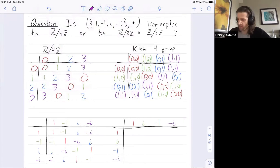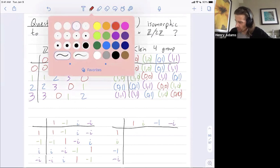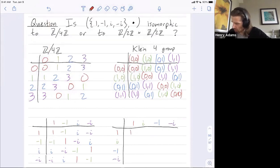So now let's fill out this multiplication table. My ones are here and then also here. Negative one times negative one is one. And i times negative i is one.